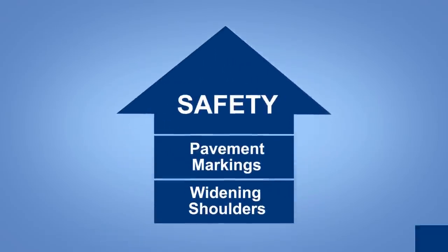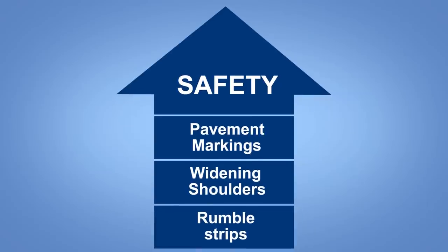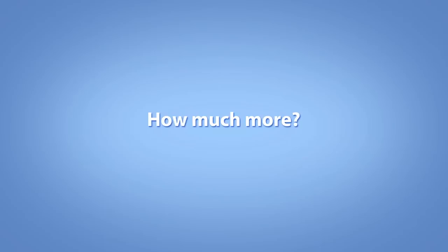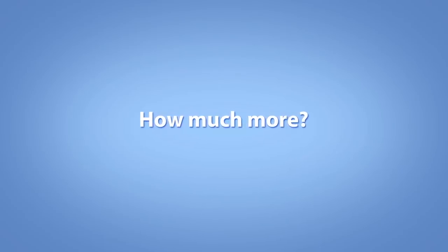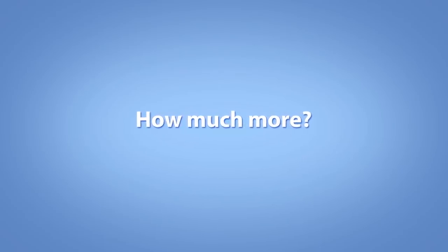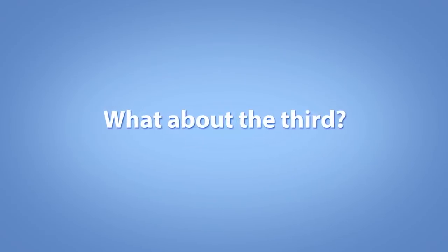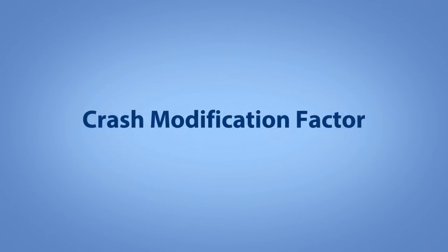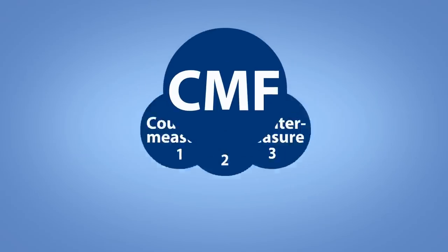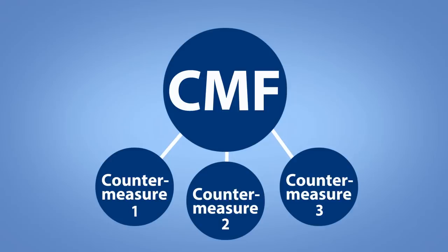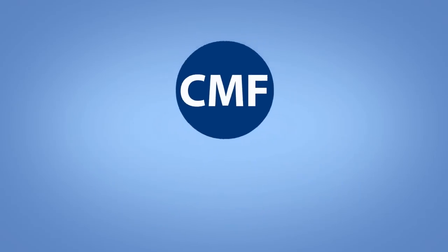It makes sense that additional improvements would provide an added safety benefit beyond that of the first countermeasure. But how much more? Would you expect the same safety benefit from the second countermeasure as if it was installed by itself? What about the third? Ideally, a crash modification factor, or CMF, would be available that represents the effect of combined countermeasures. If so, it is relatively easy to use a single CMF to estimate the change in crashes.